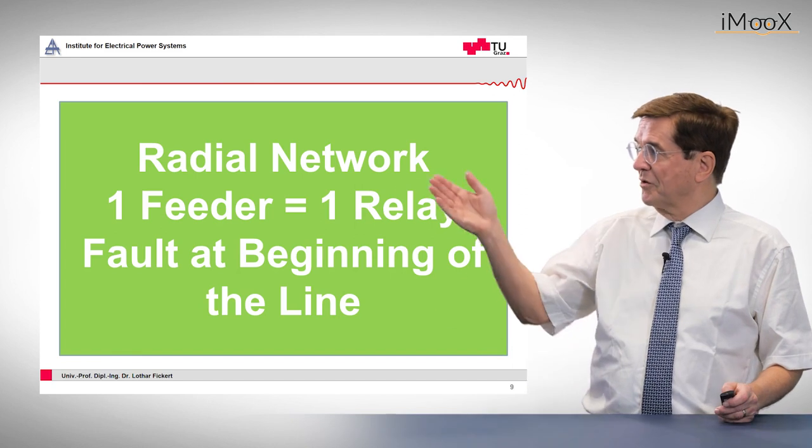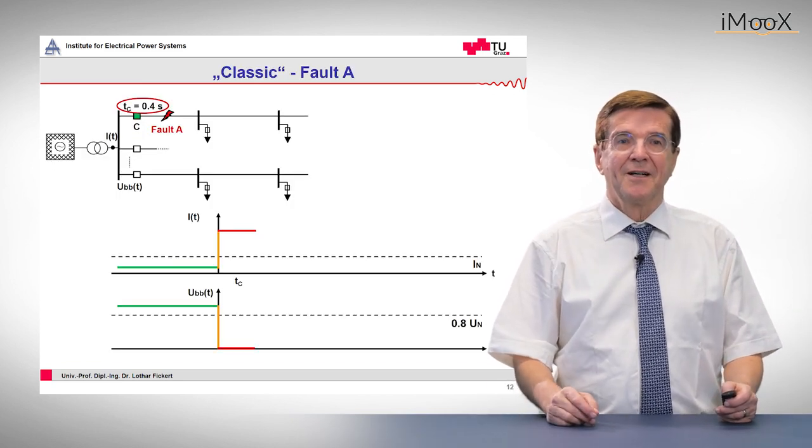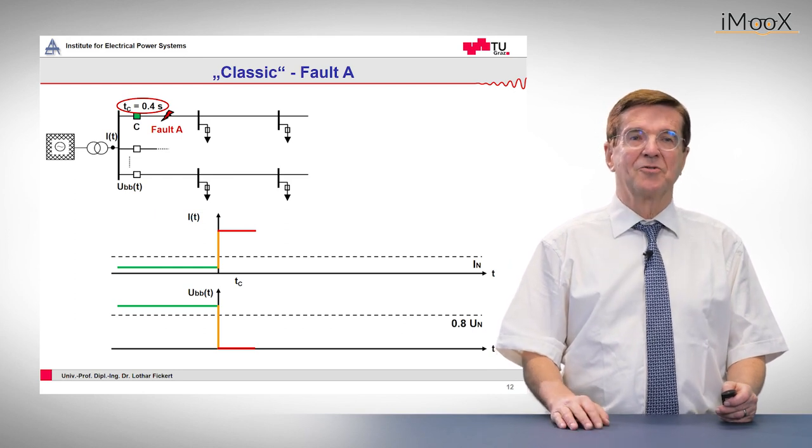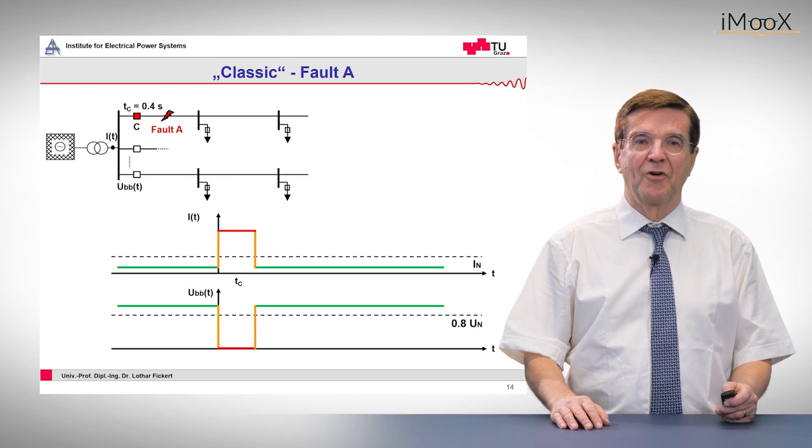The same happens if the fault is at the beginning of the line. So the fault occurs, the timer starts to run. After this, the timer has tripped and the fault is cleared.